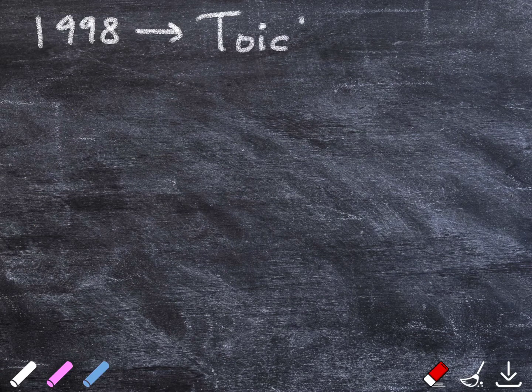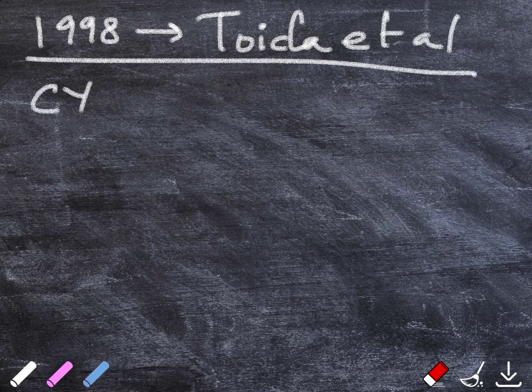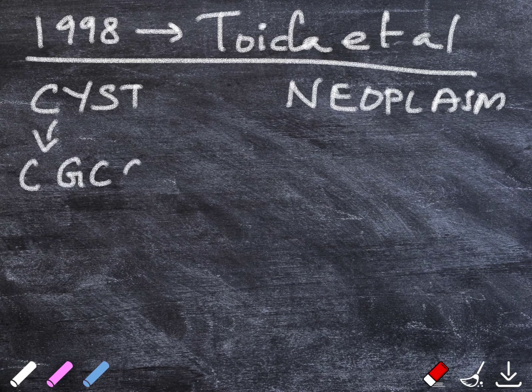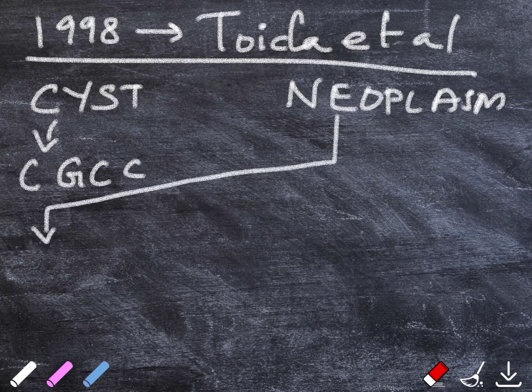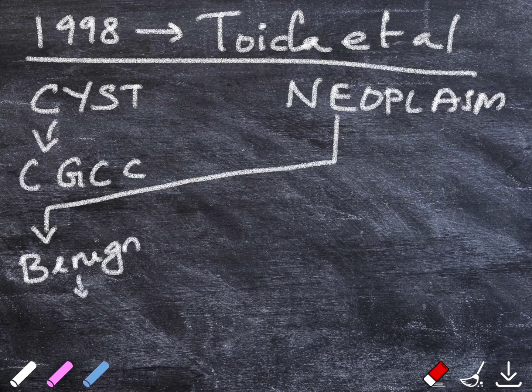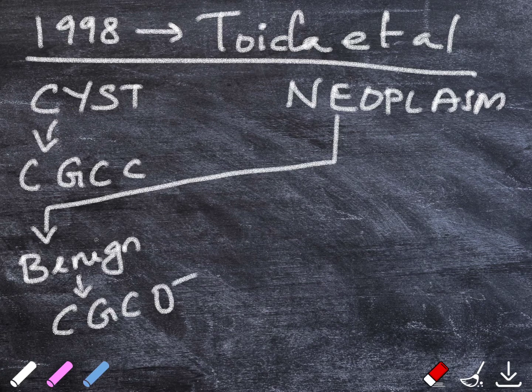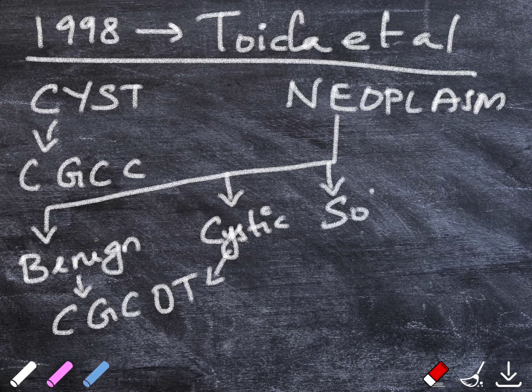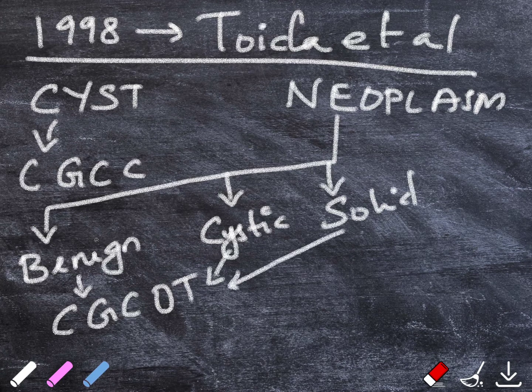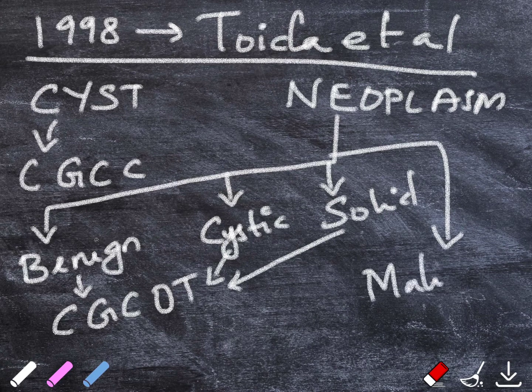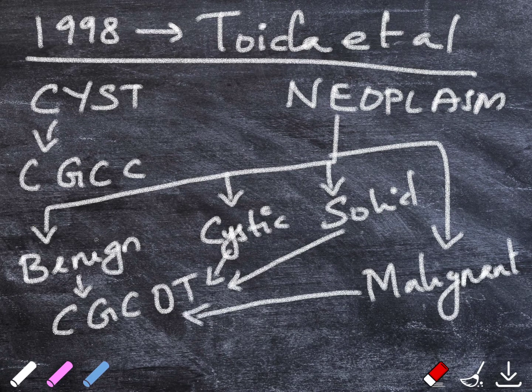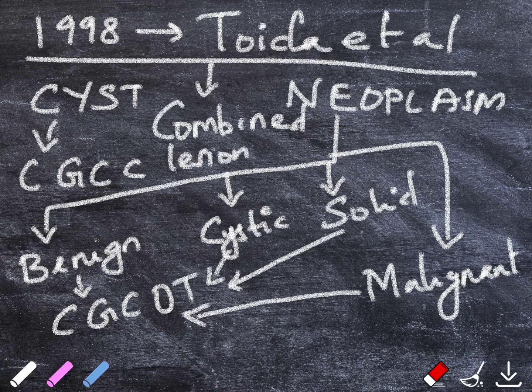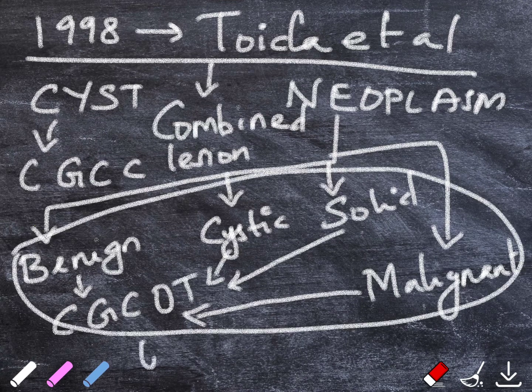Toida et al., in 1998, divided it again into a cystic, a neoplasm, and a combined lesion. The cystic lesion was the calcifying ghost cell odontogenic cyst. The neoplasm had the benign calcifying ghost cell odontogenic tumor, then a cystic variant of the same lesion, then a solid variant, and finally a malignant variant. The combined lesion was when any of this category was seen in association with an odontogenic lesion like an odontoma, ameloblastoma, or any other odontogenic tumor.